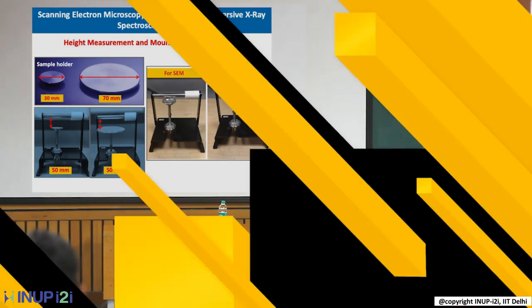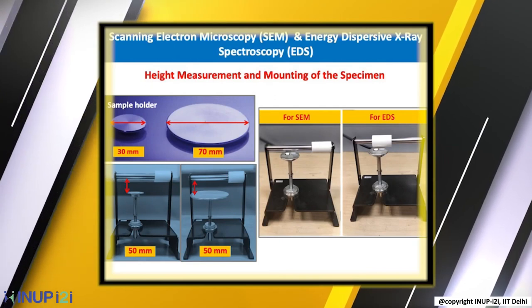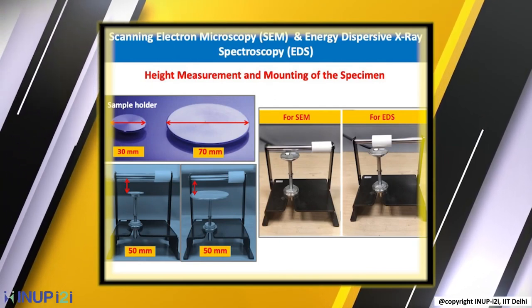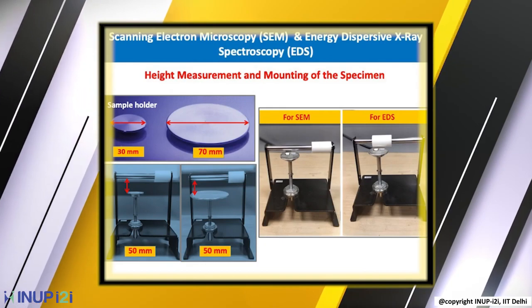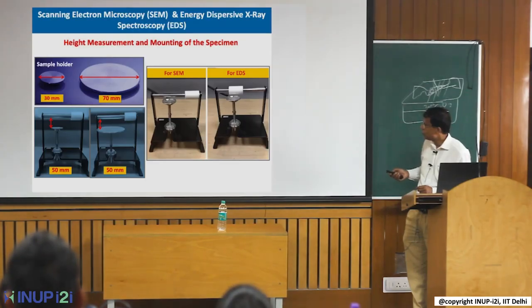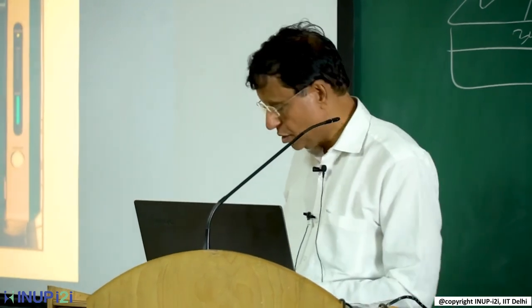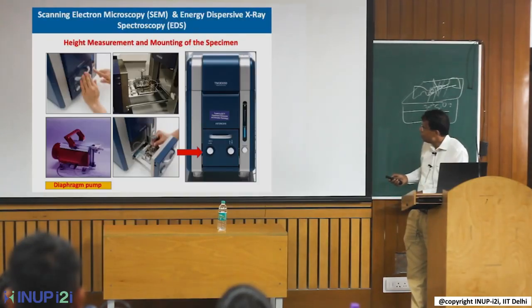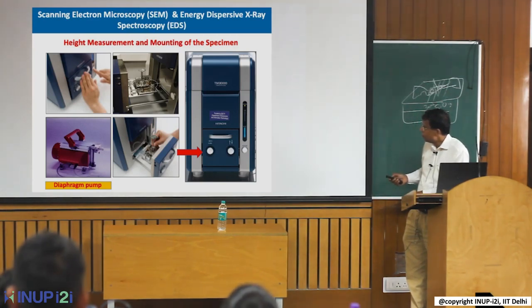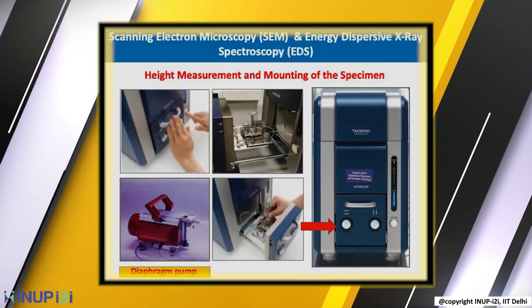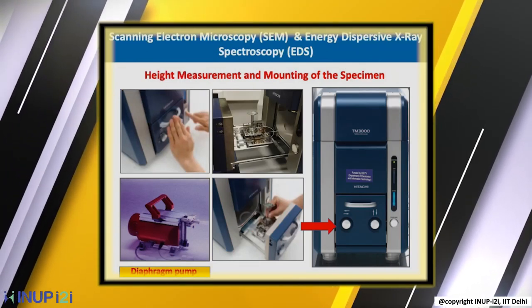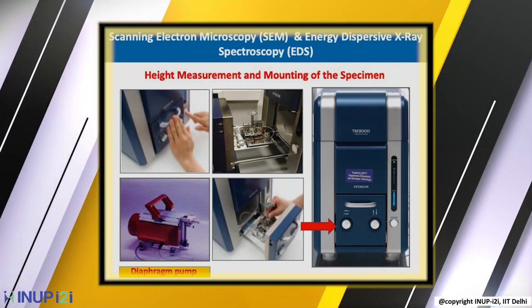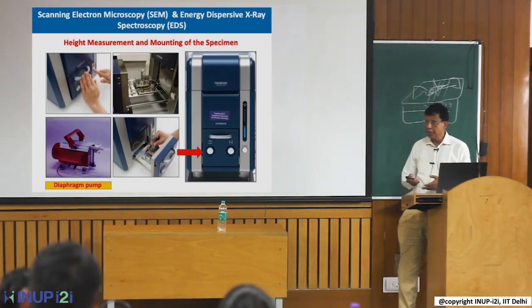These are photographs showing the SEM and how samples are placed. For EDS you keep the detector slightly farther; for SEM imaging you can go nearer. The sample is placed on the stage, the chamber is closed, the pump is turned on, and only when vacuum is created is the gun switched on and image acquisition begins.